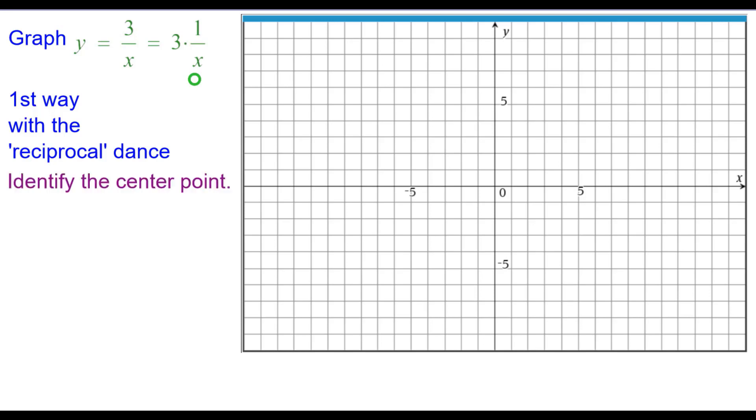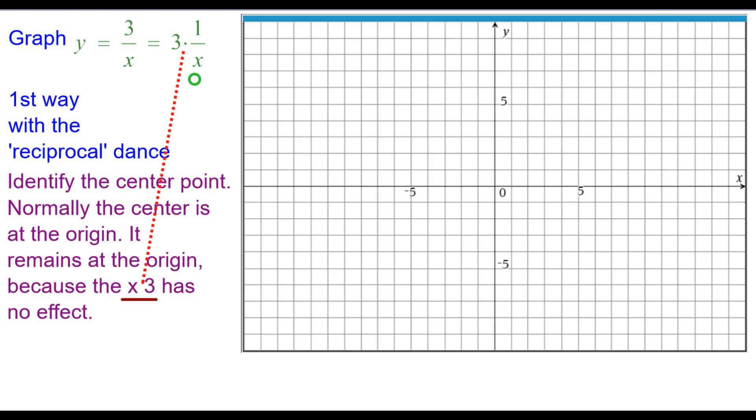The first way is with what we call the reciprocal dance. So we are going to identify the center point, which is normally the origin. And it remains at the origin at this one because the times 3 has no effect on that. So the center is going to be at 0, 0.